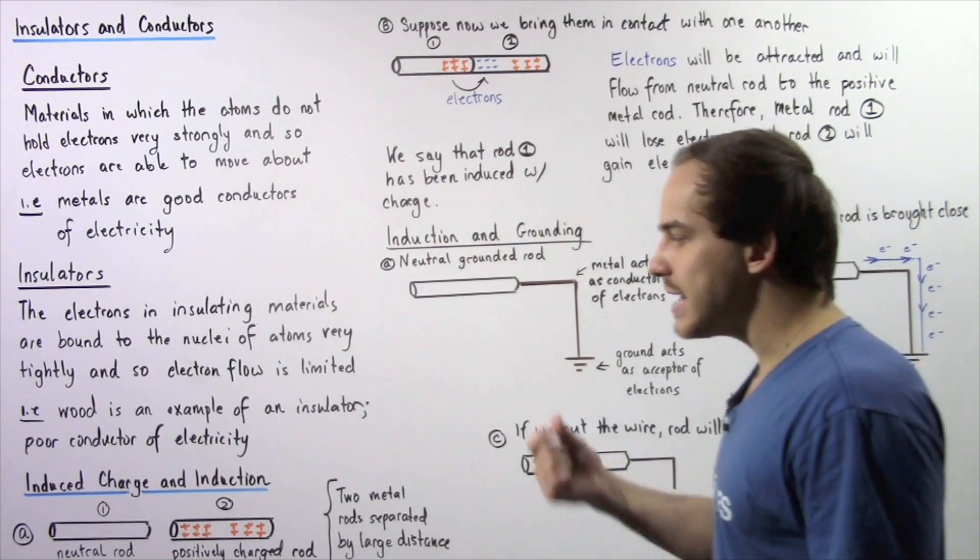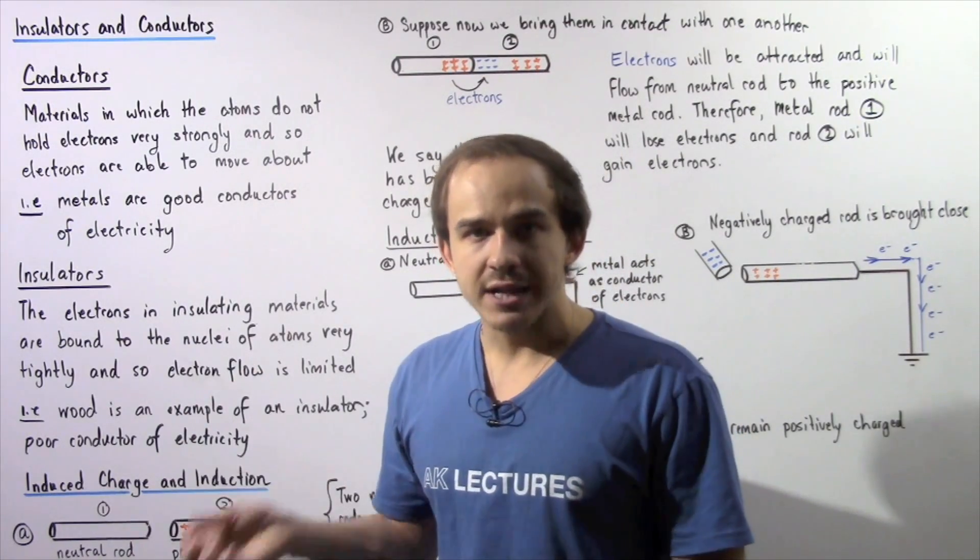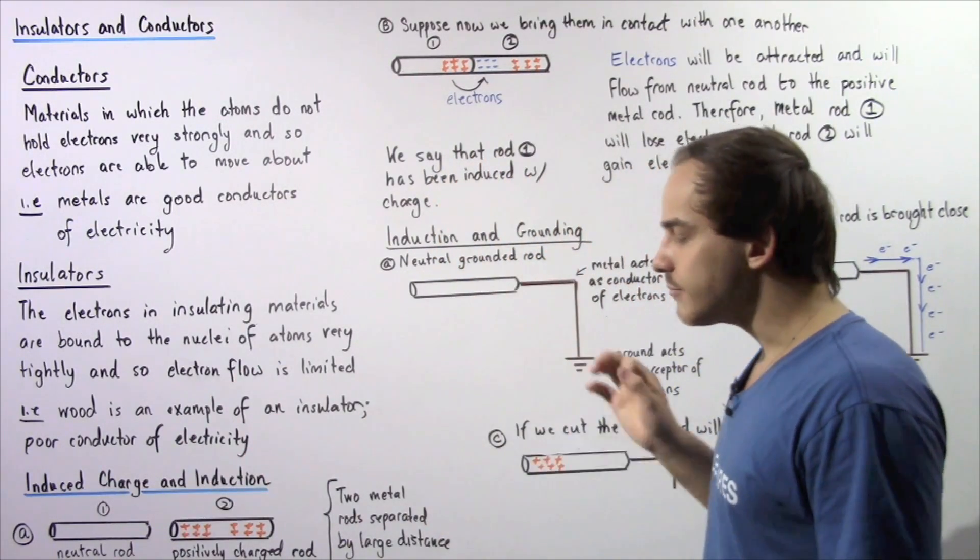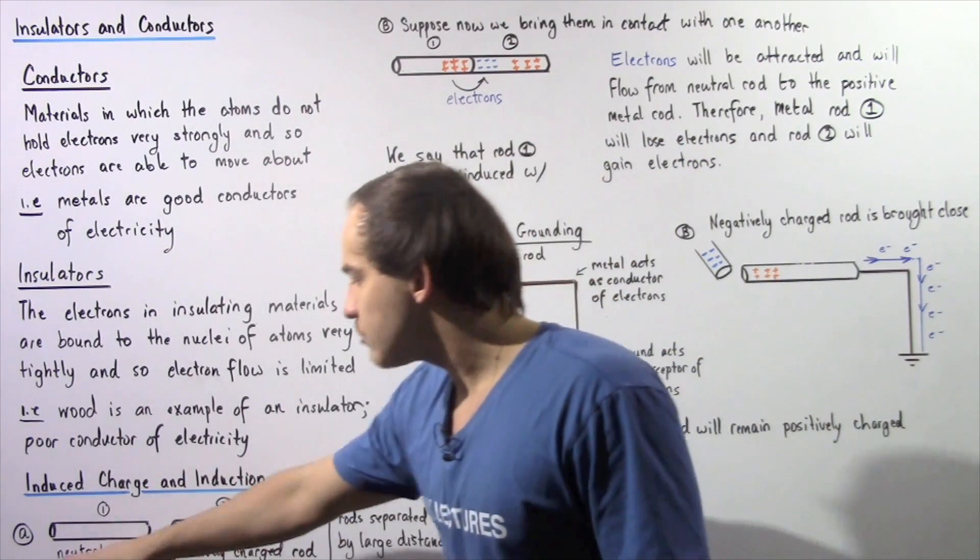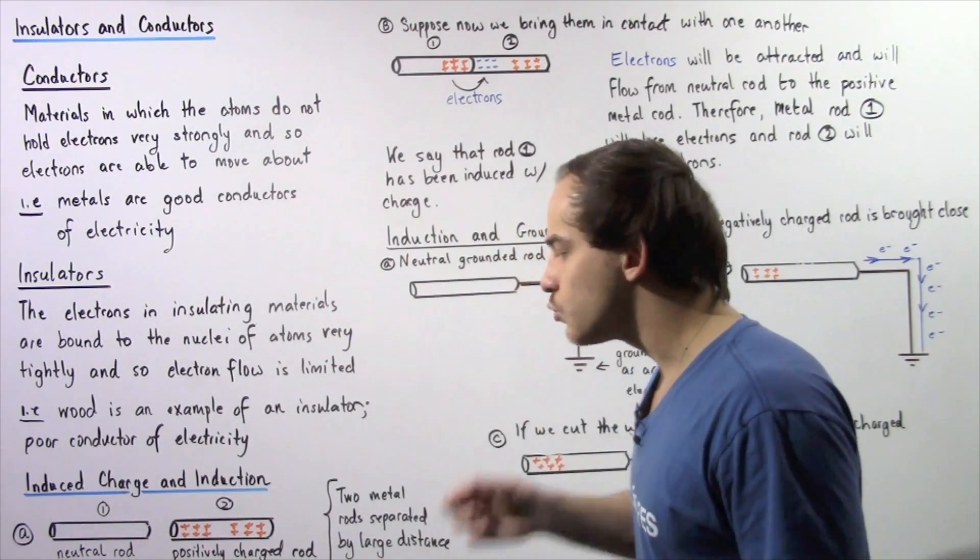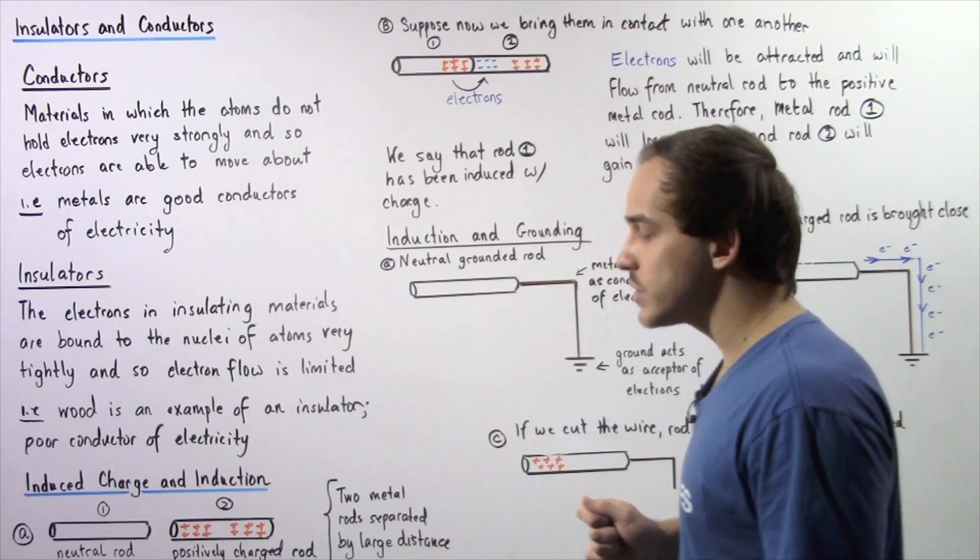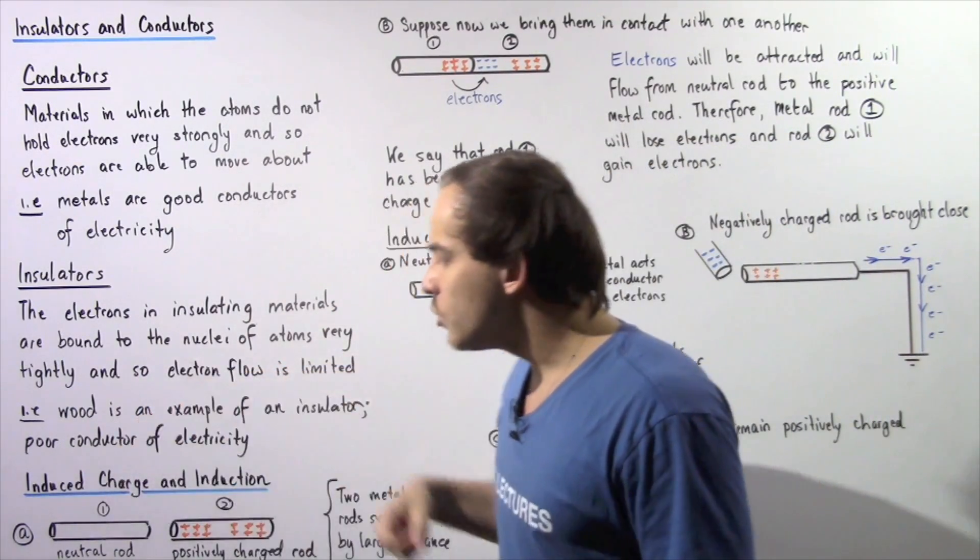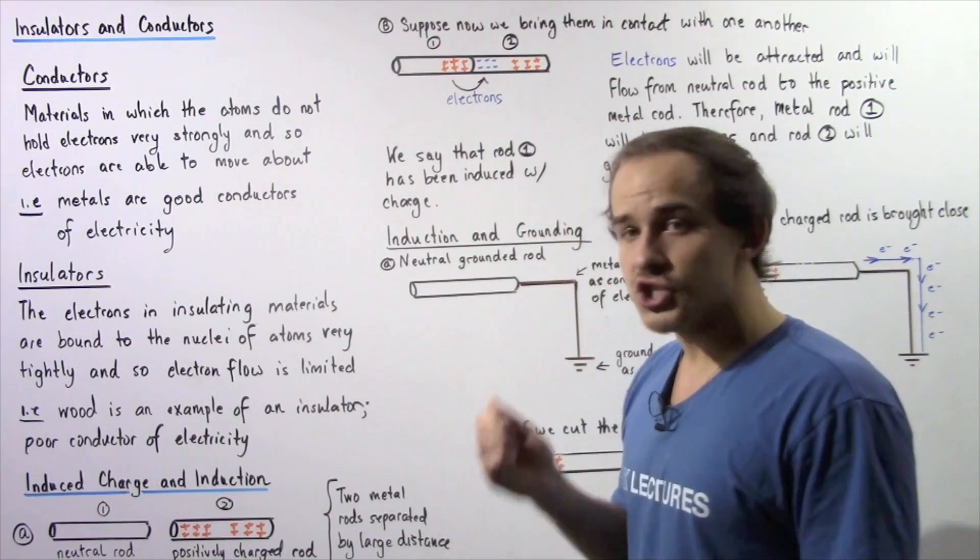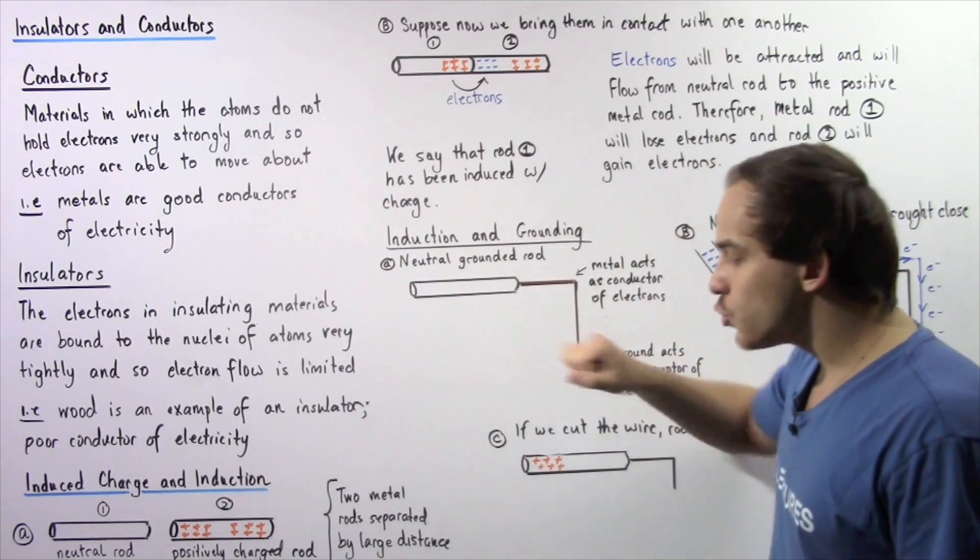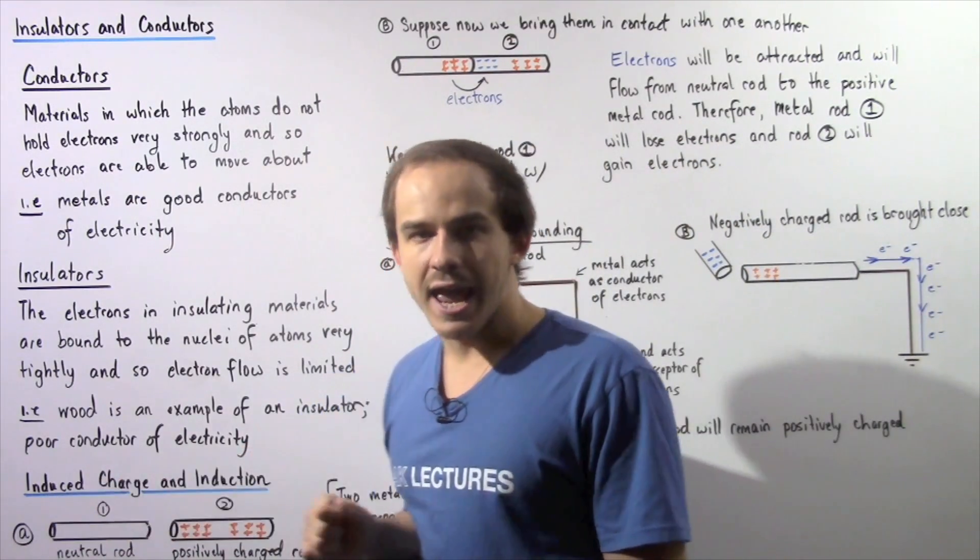Now we're going to discuss a process known as induction and charging objects by induction. Let's suppose we have two objects. Let's suppose our two objects are metal rods, so that means they're good conductors of electricity. Rod number one is a neutral rod, and rod number two has a positive charge. These two rods are separated by a large distance in part A.